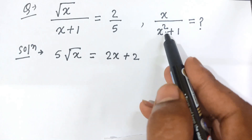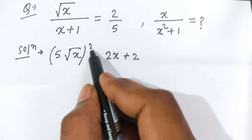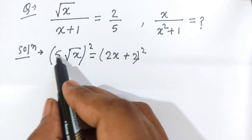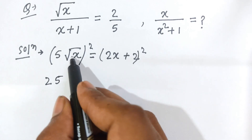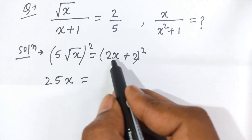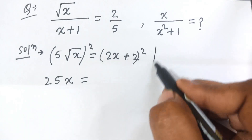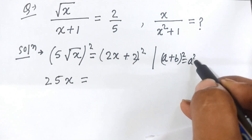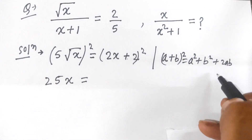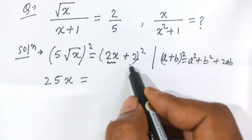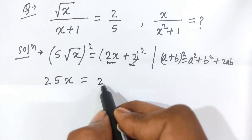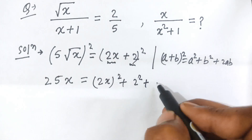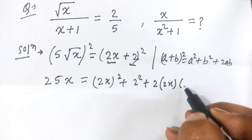Now, here we have x and here x square, so if we take square on both sides, then on the left hand side 5 times square root of x, squared, that is 5 square that is 25, and square root of x square that is x. This is equal to a plus b whole square. We know the algebraic identity of a plus b whole square: this is equal to a square plus b square plus 2 times ab. Then 2 times x is a and 2 is b, so a square that is 2 times x square, plus b square that is 2 square, plus 2 times a that is 2x and b that is 2.